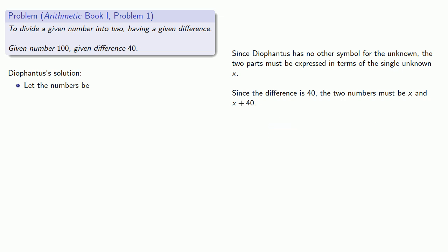Diophantus's first line is: let the numbers be x and x plus 40. Now we have a second condition: our given number is divided into two parts. Since the two numbers together make 100, then x plus x plus 40 is 100. The next line in Diophantus's solution observes that 2x plus 40 is 100, at which point he solves it more or less as we would: 2x is 60 and x is 30.